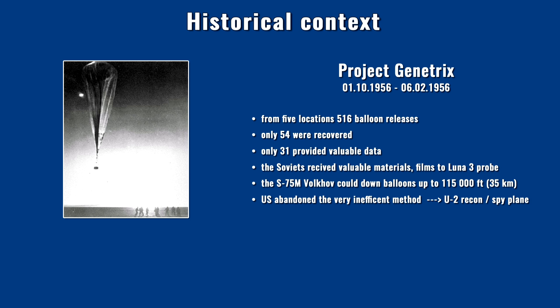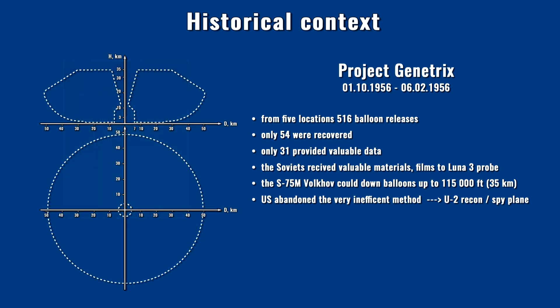Thanks to that, the Soviets were able to achieve both scientific and propaganda success. Because of extremely low efficiency, using reconnaissance balloons was discarded and the U-2 aircraft was given the green light — it was already under development when the spy balloons were launched. However, the Soviets anticipated further incoming spy balloons. The S-75 Dvina was able to engage such targets up to 115,000 feet of altitude. The missile's warhead was detonated by a proximity fuze 120 meters from the balloon, to achieve full coverage of the target with shrapnel.